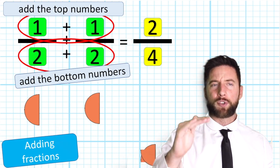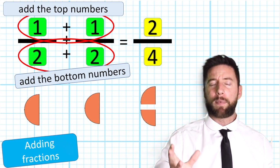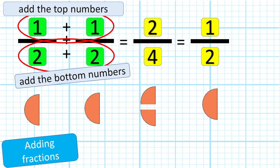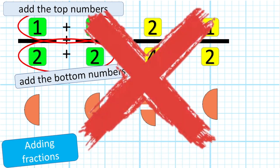Now 2/4, or two quarters, simplified down, is 1/2. One half add one half is one half. Okay, we've done something wrong. We cannot use this same trick. Let's see why this does not work.